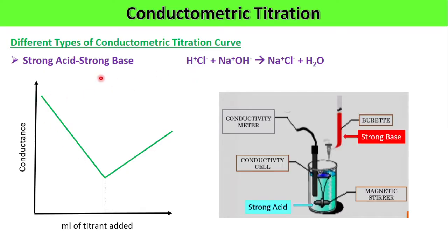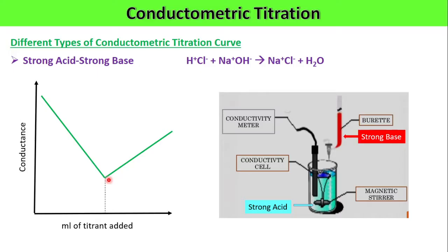The reason conductance decreases is that H⁺ ions have stronger ionic mobility than Na⁺ ions. As NaOH is added, HCl gets consumed and water is formed. The minimum point is called the end point. After this point, further addition of NaOH leads to an increase in conductance. From this end point value, we can determine the exact concentration of the unknown acid solution, as measured using the conductivity cell and conductivity meter.